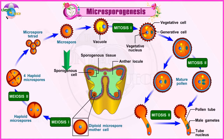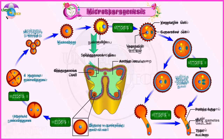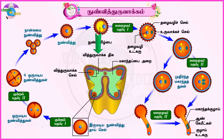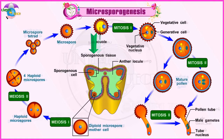The primary sporogenous cells directly, or after undergoing a few mitotic divisions, form sporogenous tissue. The last generation of sporogenous tissue functions as microspore mother cells.